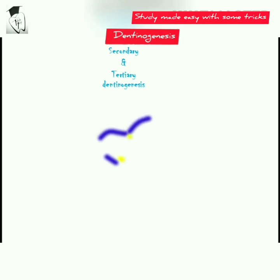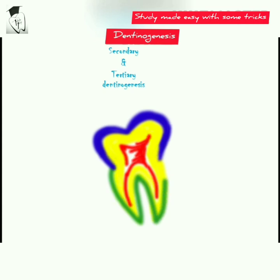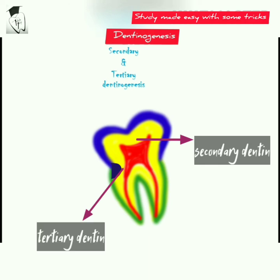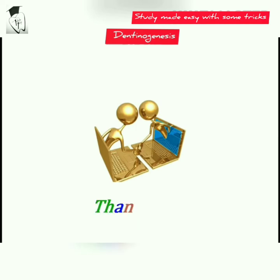Secondary dentine forms after root completion throughout life; it is present in the roof and floor of the pulp chamber and has fewer dentinal tubules. Tertiary dentine forms at a specific site only in response to injury. That was all about dentinogenesis — thanks for watching, and press the bell icon for the latest video updates.